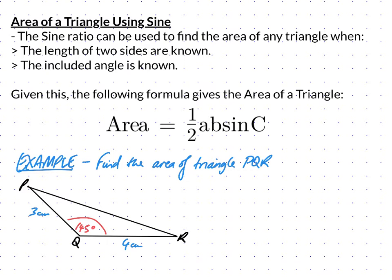The included angle is the angle that's between the two sides that you know. It's the only way that this works. Given this, the following formula gives the area of a triangle: the area being 1/2 times A times B times the sine of the angle C.